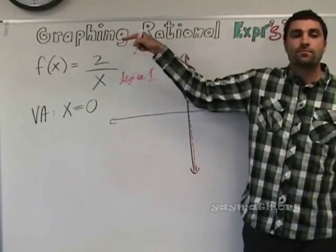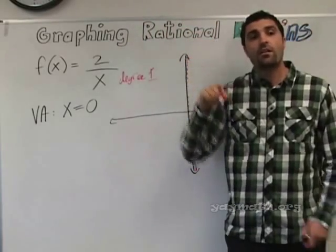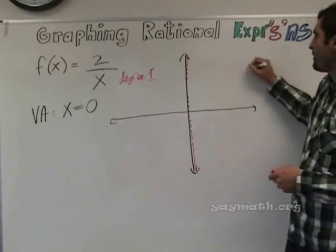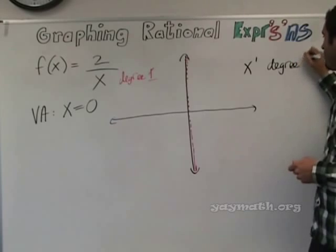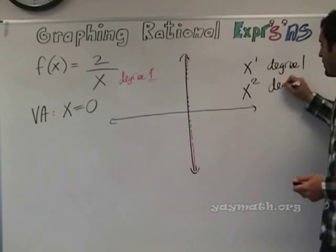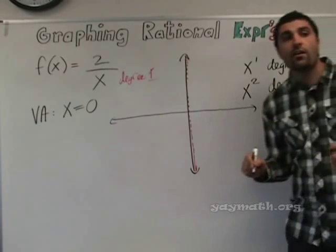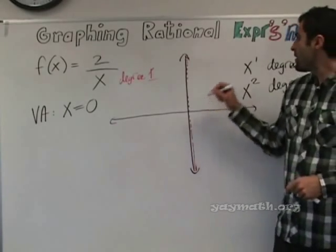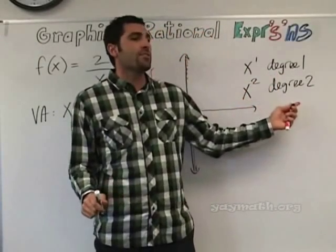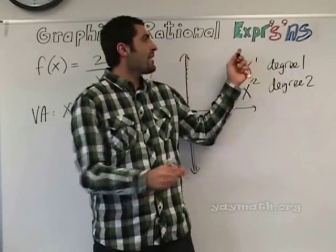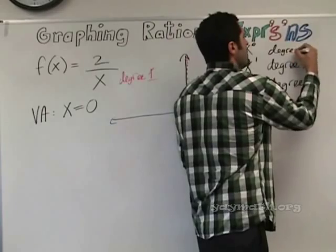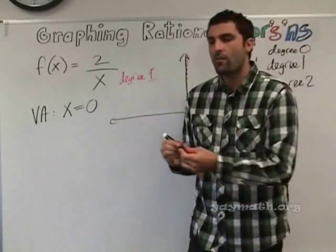What is the degree of the numerator? 1? No — it's 0. x to the 1 is degree 1, x to the 2 is degree 2. So if x to the 1 is degree 1 and x to the 2 is degree 2, what would x to the 0 be? Degree 0, right? And what is x to the 0 really? 1 — the number 1.